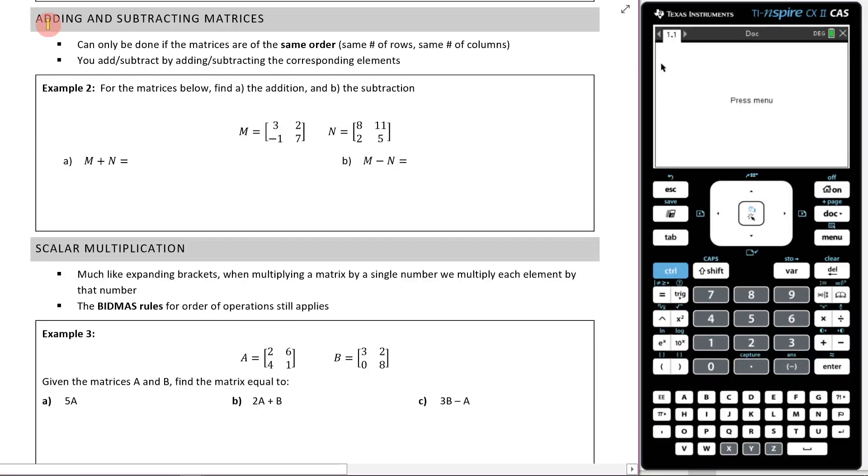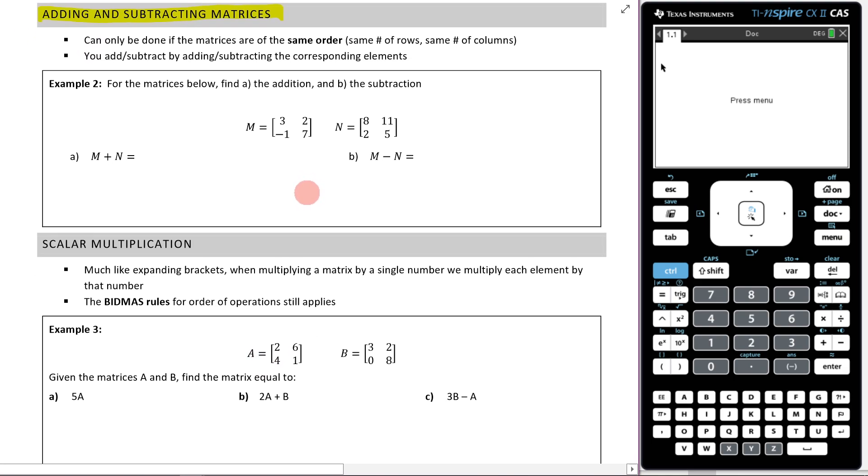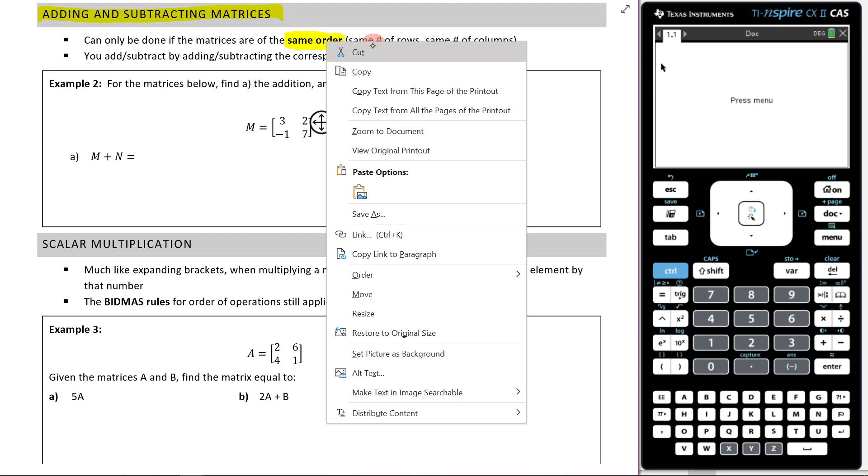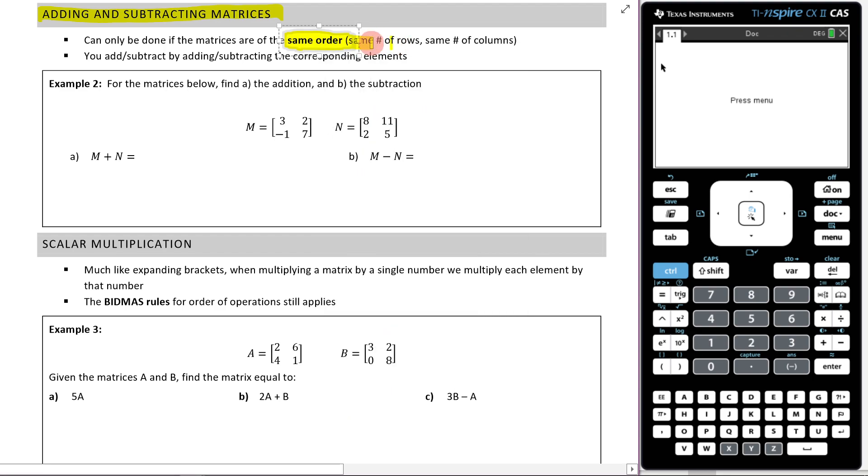We're now going to talk about adding and subtracting matrices. Adding and subtracting matrices can only be done if the matrices are of the same order. So you can only add or subtract when the matrices are of the same order, meaning they have the same number of rows and columns. That's really important. You add or subtract by adding or subtracting the corresponding elements.